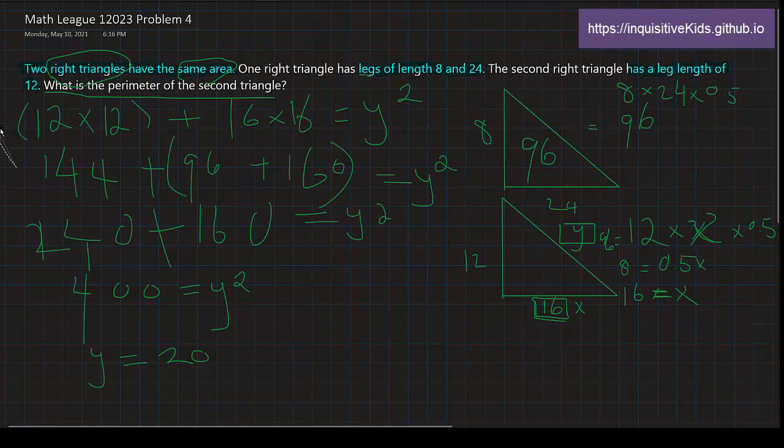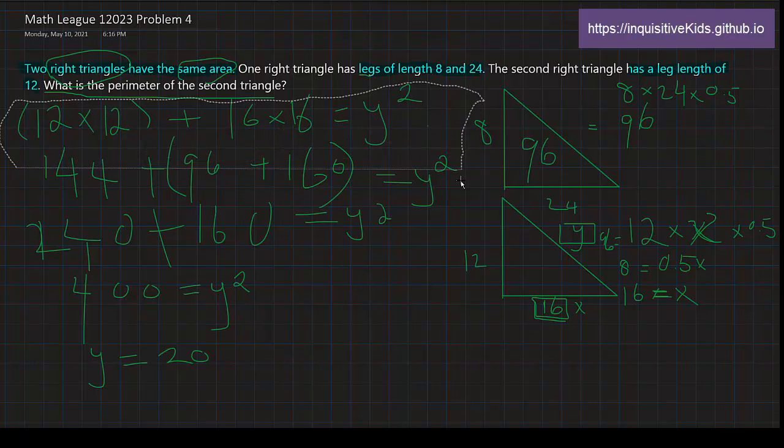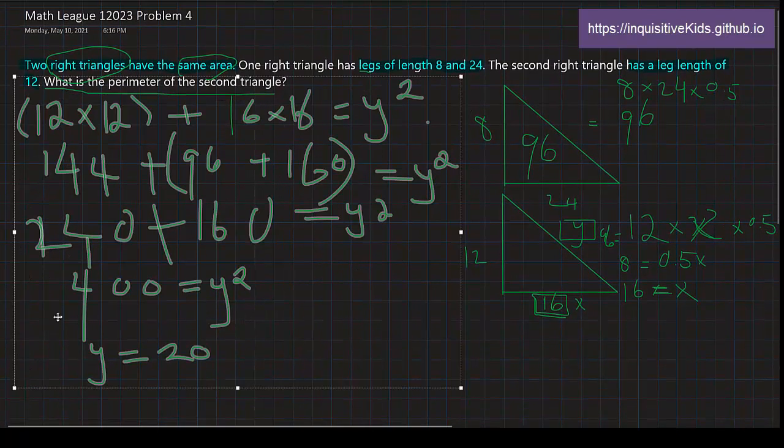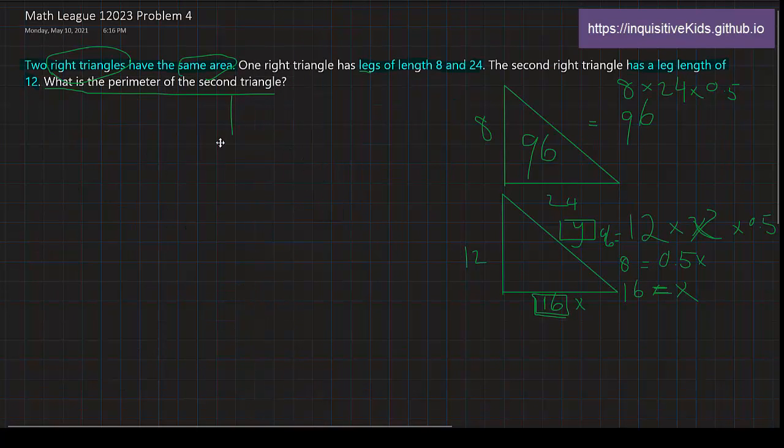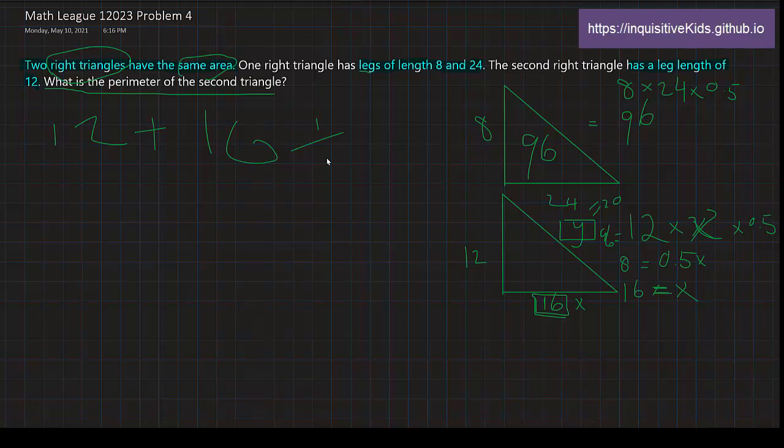Now that we've got y equals 20, we're going to use that information to figure out the perimeter which is solving this question. Y we already know is equal to 20. We're going to add these sides up, and then we'll get 48 as our final answer. Thank you.